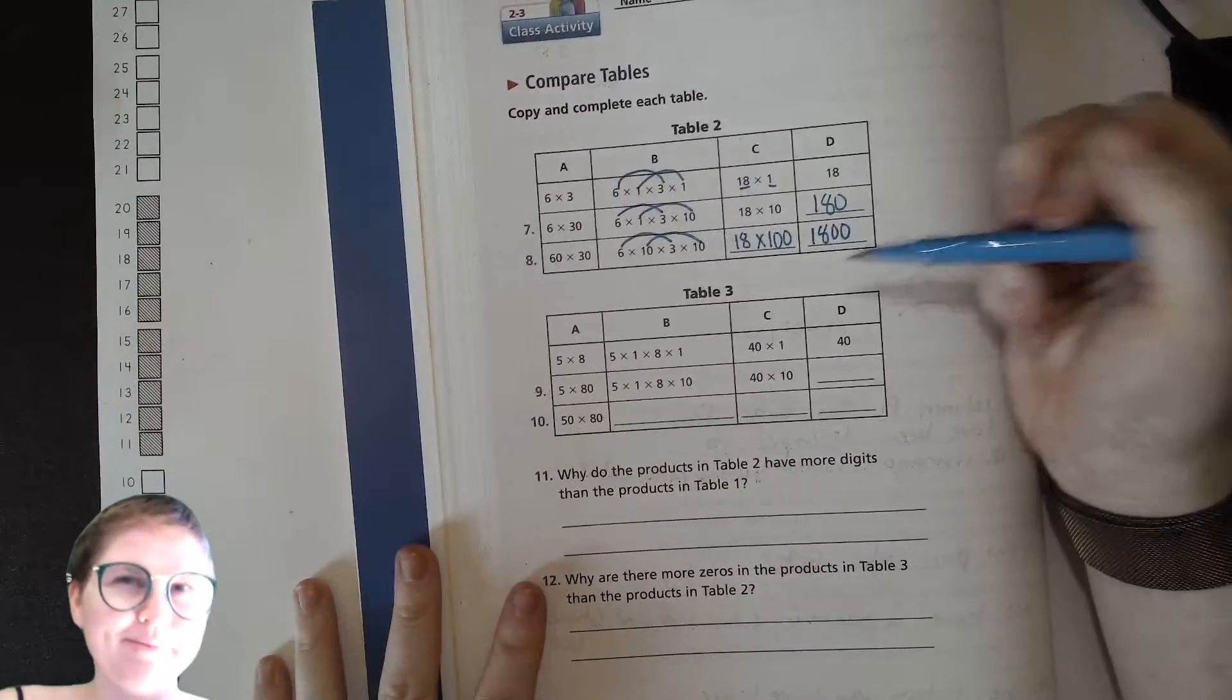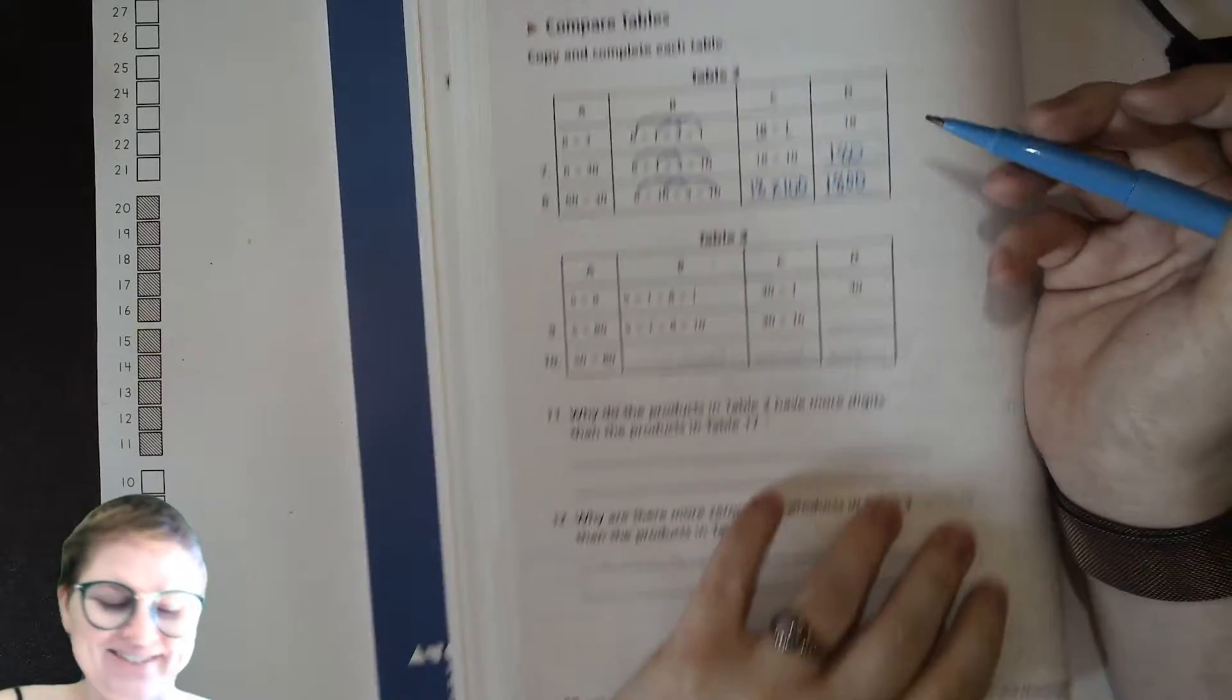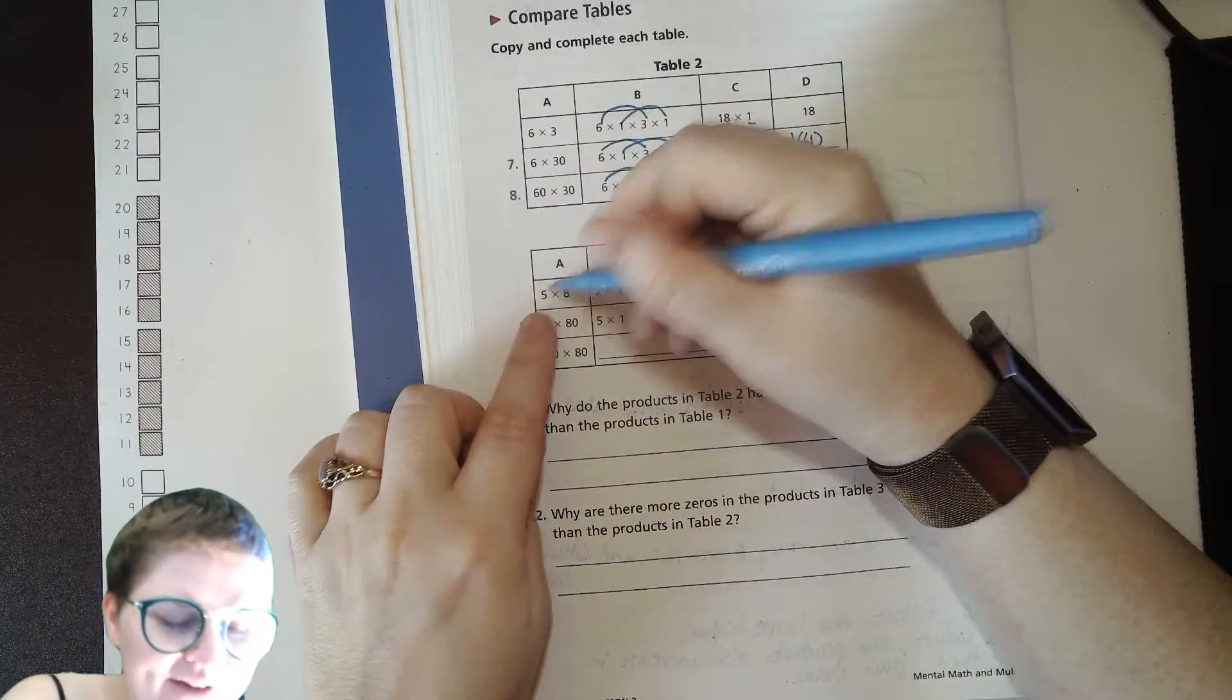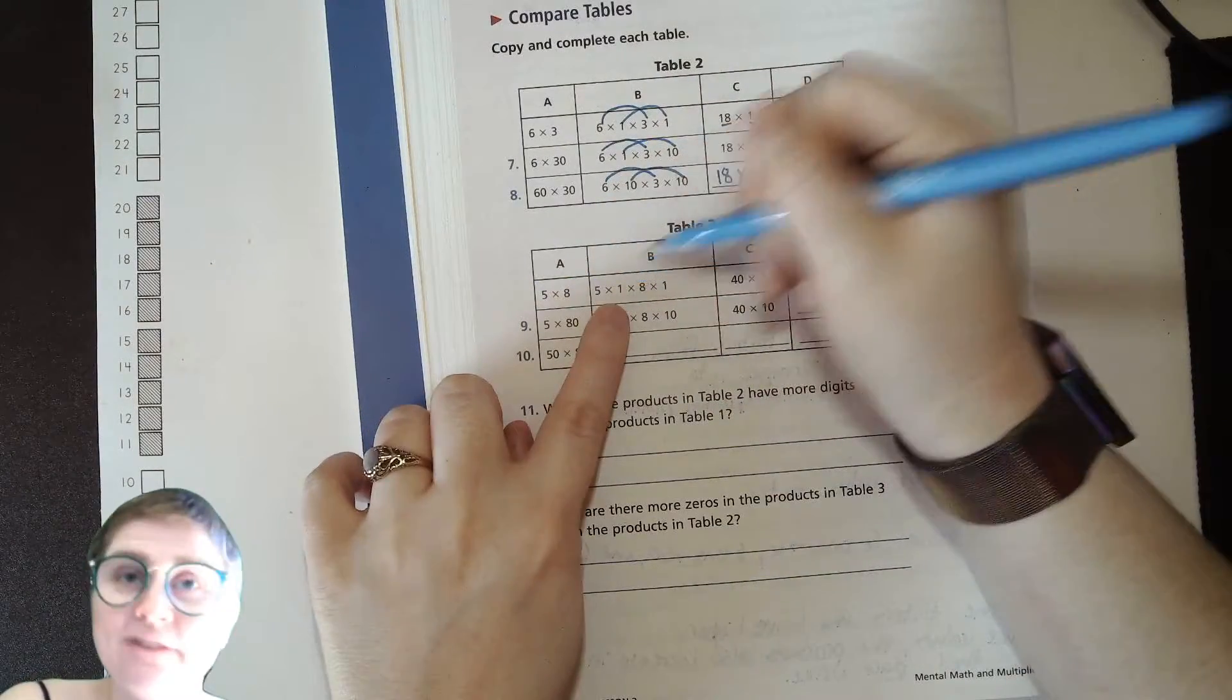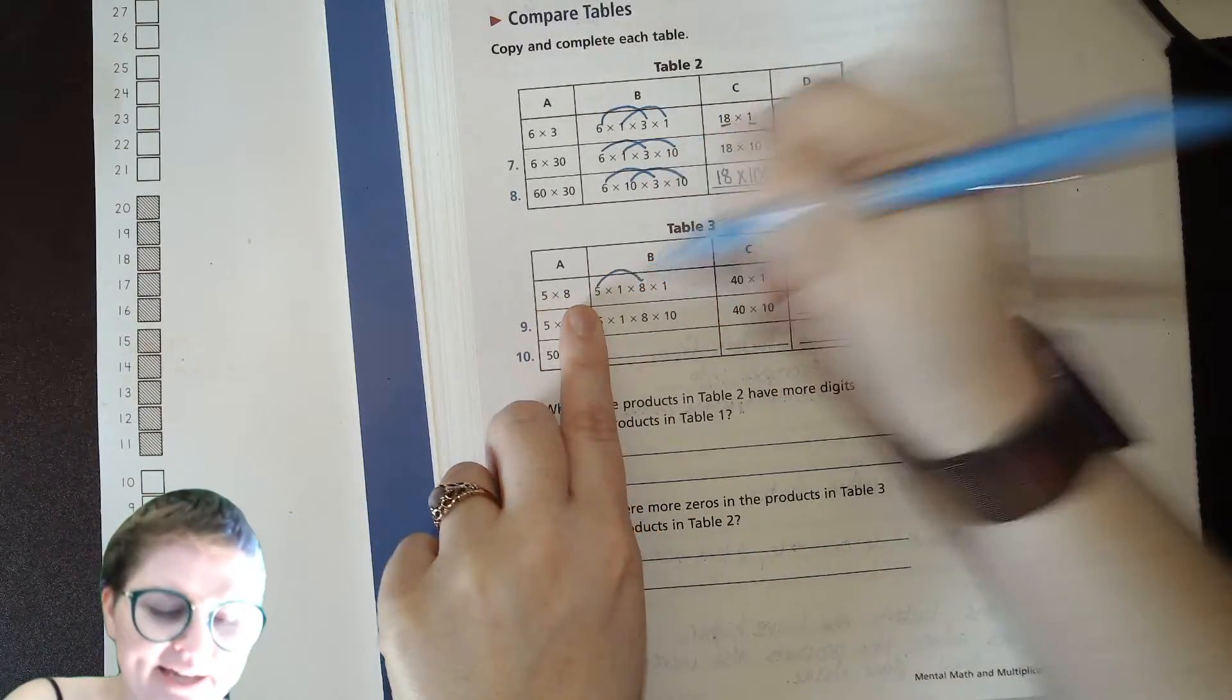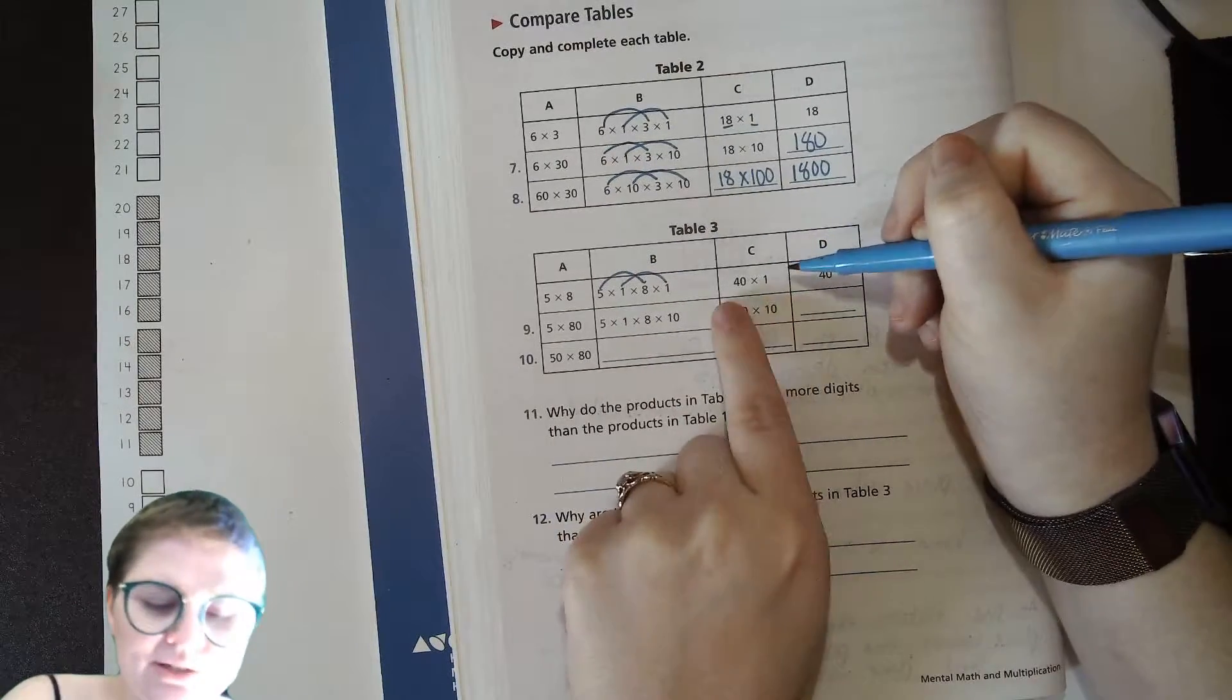All right, if you stay with me on this one, give this one a shot. I'm pretty sure you can do it. Let's see. Okay, here I go. Five times eight. Five is the five times one, eight is the eight times one. Five times eight is 40. One times one is one, so our answer is 40.